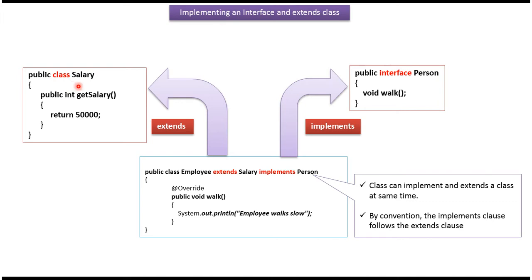Here you can see class Salary — it has a getSalary method. Here you can see interface Person — it has abstract method walk. Here you can see the Employee class, which extends the Salary class and implements the Person interface, and provides an implementation of the walk method.